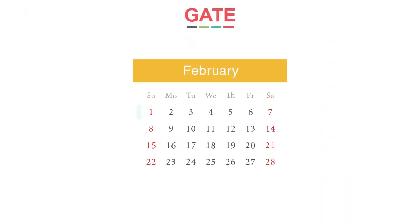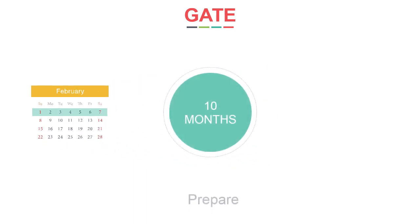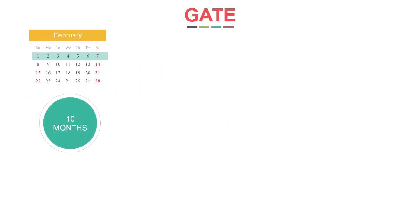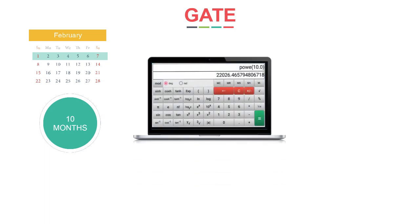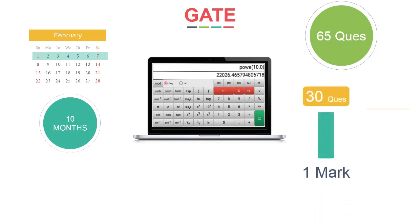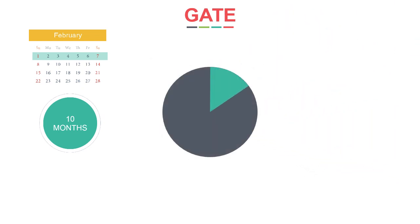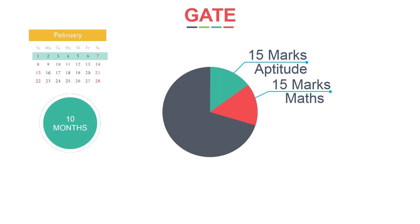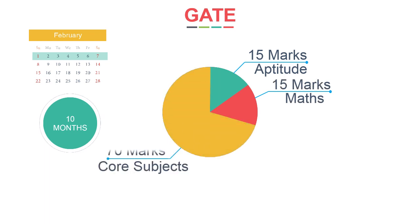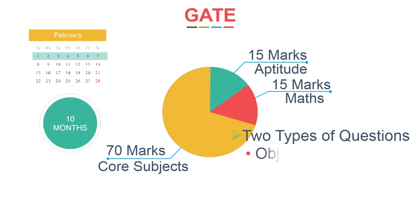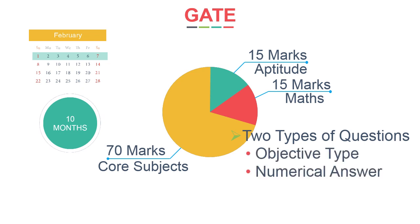GATE will happen in the first week of February, which gives you a complete 10 months to prepare. The test paper is online with the use of a virtual calculator. There will be 65 questions, of which 30 questions will be of 1 mark and the rest 35 will be of 2 marks, totalling 100 marks. Marks are approximately distributed as 15 marks from general aptitude, 15 marks from engineering mathematics, and the rest 70 marks from core subjects. There will be 2 types of questions: objective type and numerical answer questions.